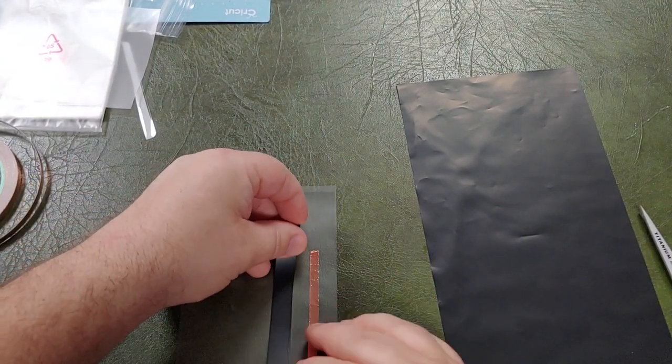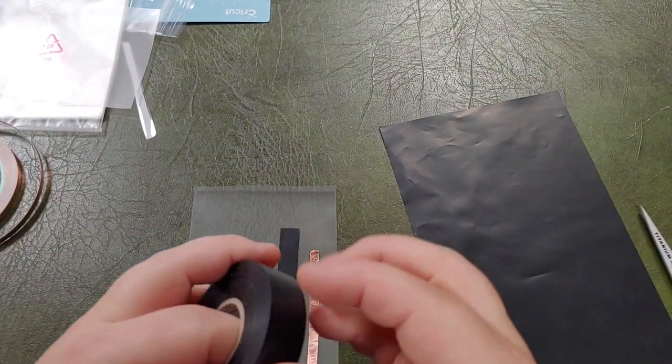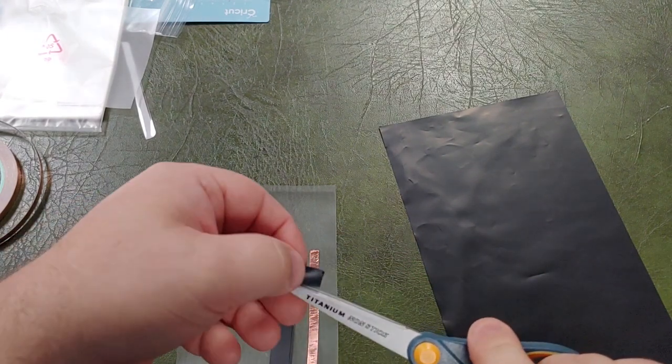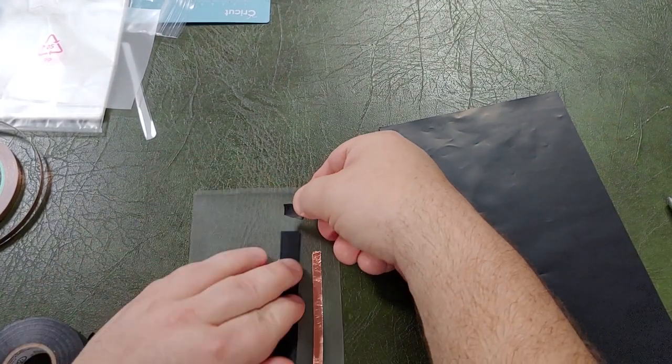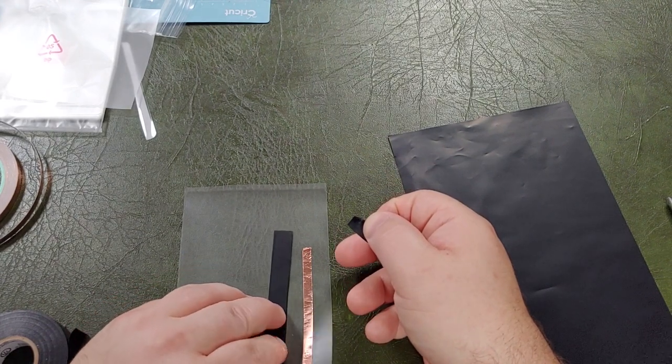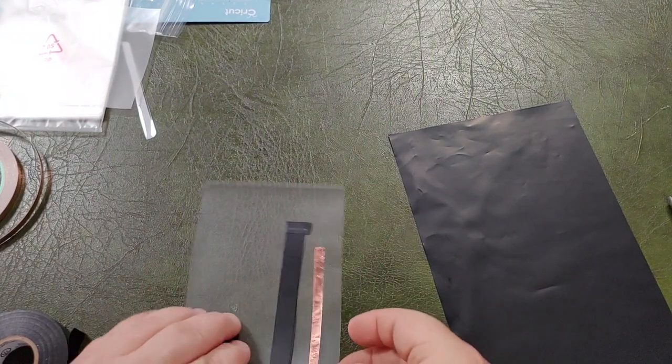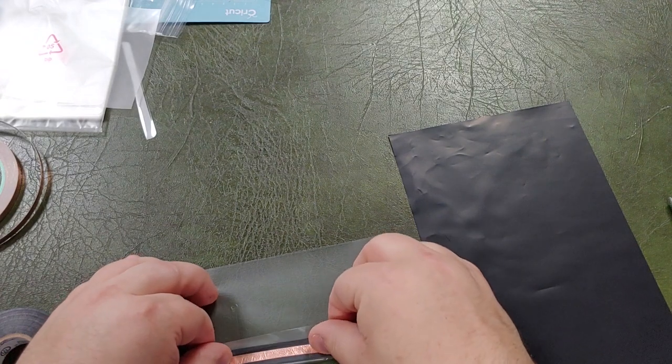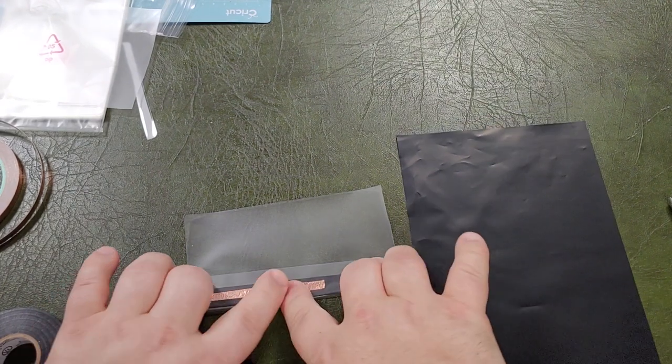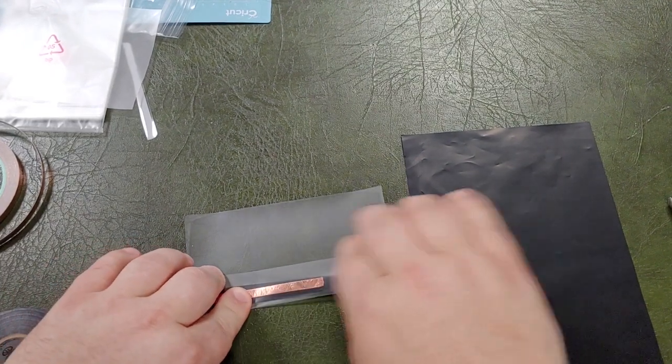And then we take our Velostat and pop it in here. Now I like to use a little piece of tape, electrical tape, insulation tape, whatever. And we're just going to make sure that the Velostat is lined up over the copper strip nicely and tape in place. And then we're simply going to fold it over so that the other copper strip is in the middle of the sheet. And then just kind of bend the laminate so it stays in place.